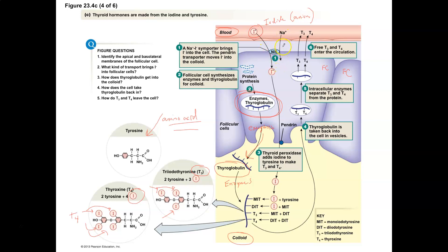We get iodide into our bloodstream from the digestive system. What we're doing here is actively transporting the iodide from the blood using sodium as a symport mechanism. So sodium and iodide come into the follicular cells. Once the iodide is in the follicle cell, it's going to move through the follicular cell and then be transported by a protein called pendrin. Pendrin is going to transport that iodide into the colloid material.